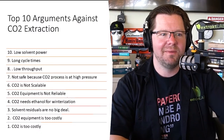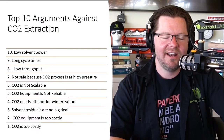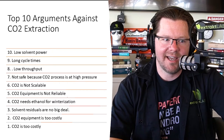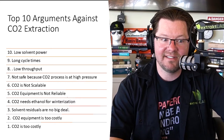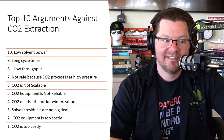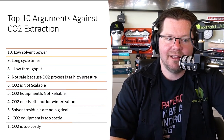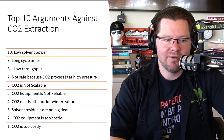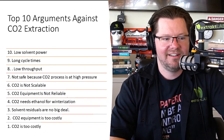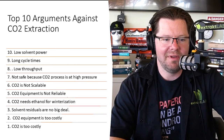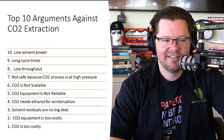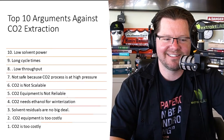Here are the top 10 arguments against CO2 extraction: number 10, low solvent power; number 9, long cycle times; number 8, low throughput; number 7, not safe because CO2 processes at high pressure; number 6, CO2 is not scalable; number 5, CO2 equipment is not reliable; number 4, CO2 needs ethanol for winterization; number 3, solvent residuals are no big deal; number 2, CO2 equipment is too costly; number 1, CO2 is too costly.